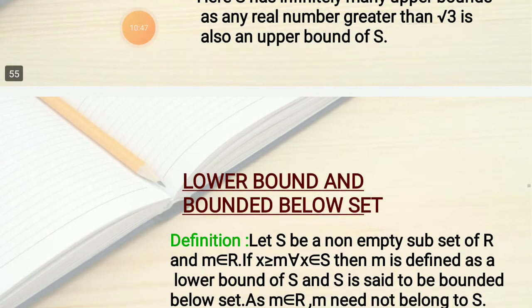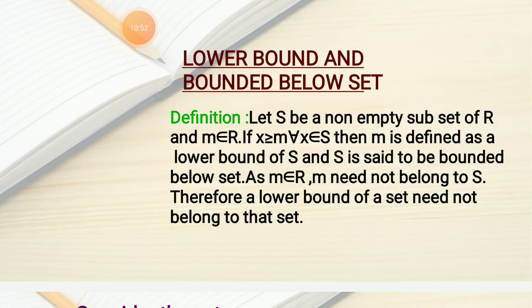After our discussion of upper bounds and bounded above sets, we move to lower bound and bounded below set. Again, we take a non-empty subset S of R and a real number m. If every member of S is greater than or equal to m, then m is defined as a lower bound of S, and S is said to be a bounded below set. Note that m need not belong to S.